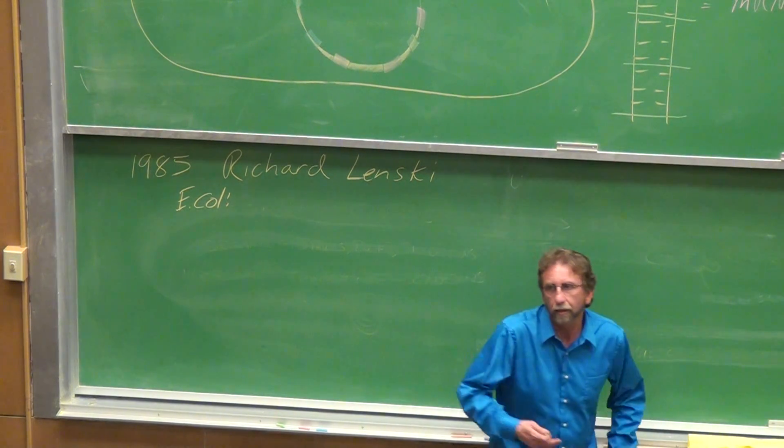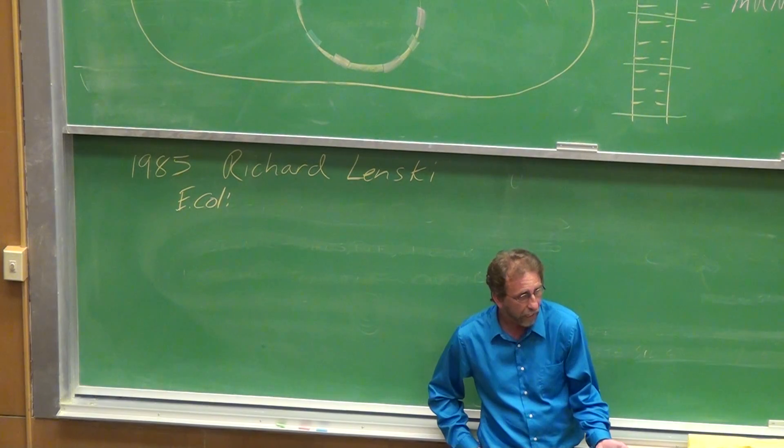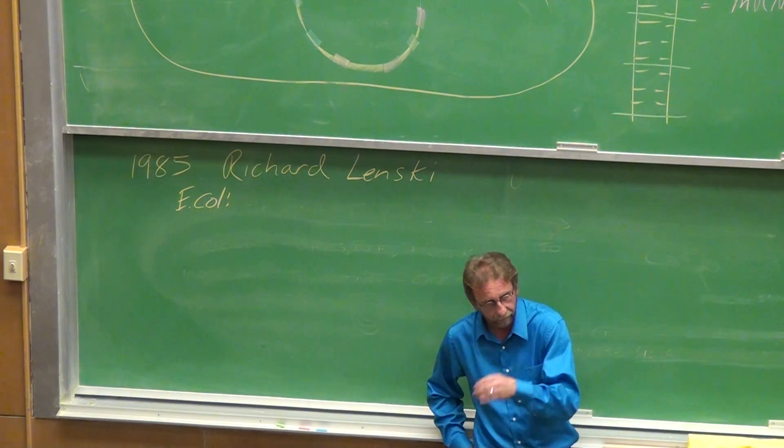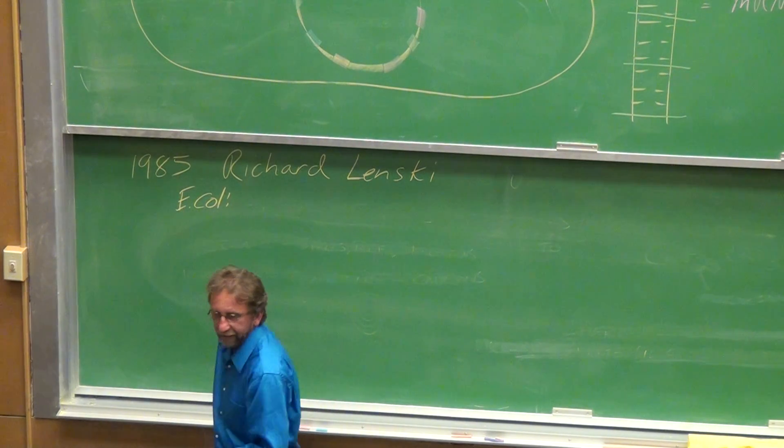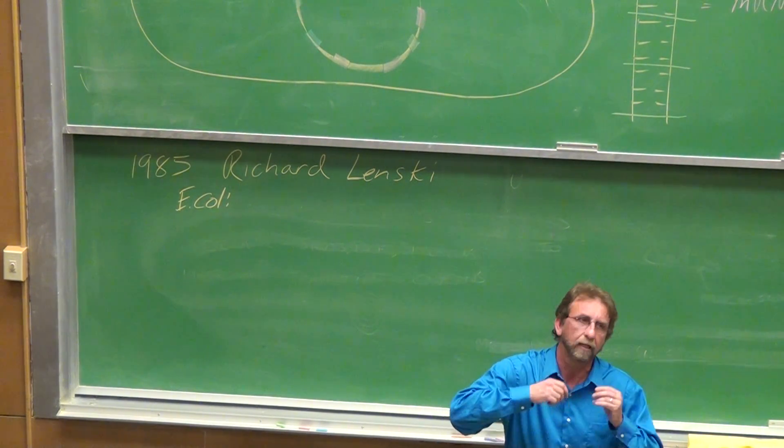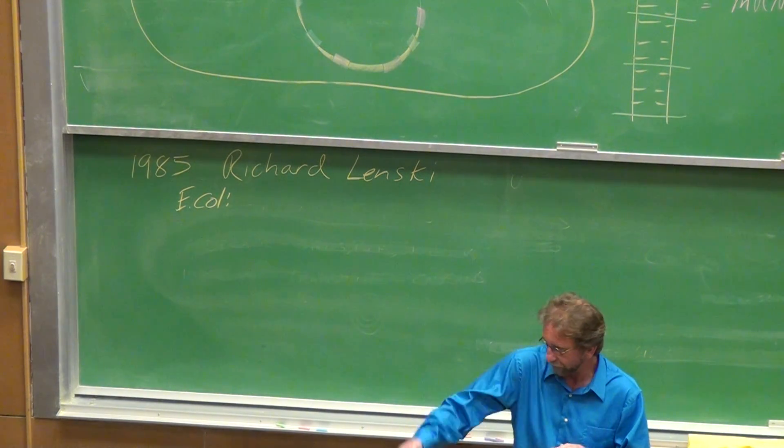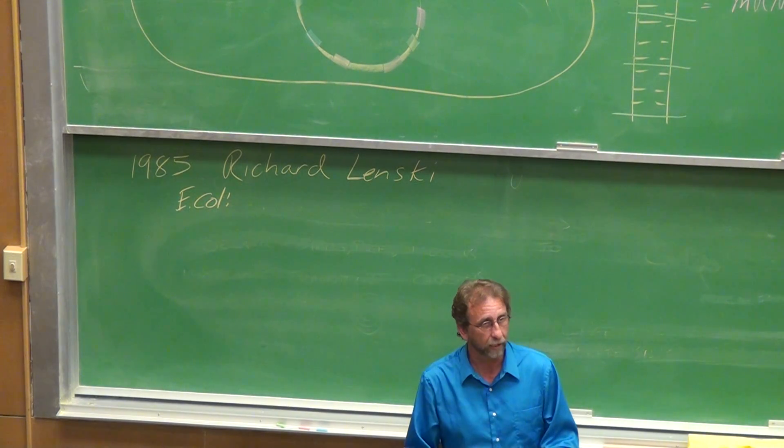Now, if we assume that a mutation happens every one in a billion times in E. coli, they have 4,500 genes total. So that means that every gene, every day, a mutation will occur somewhere on this planet for E. coli.